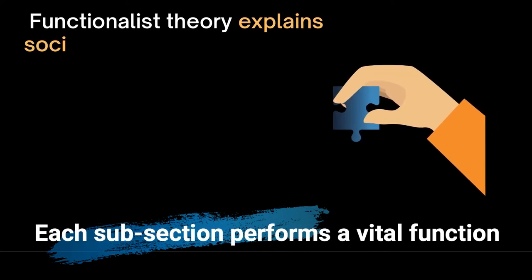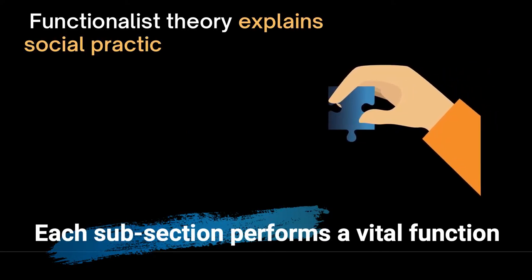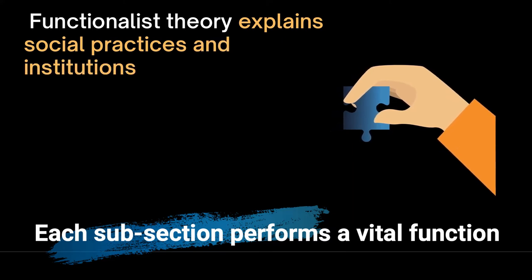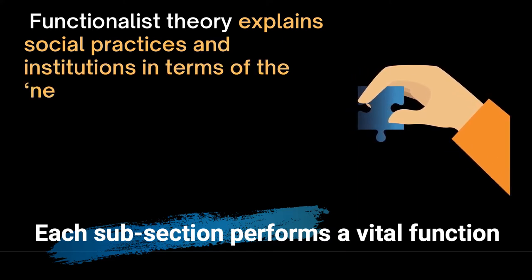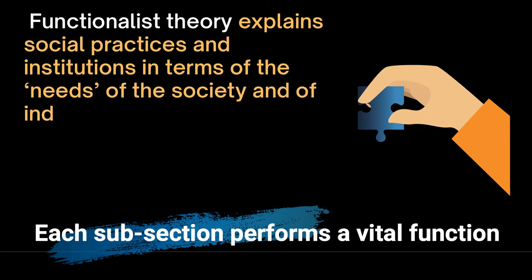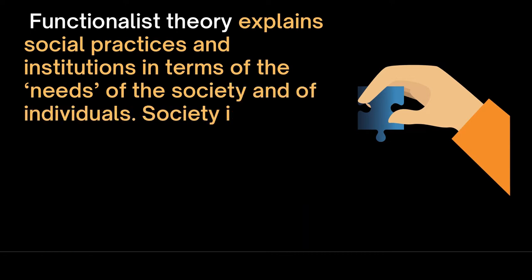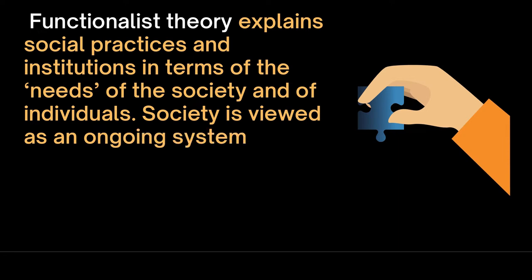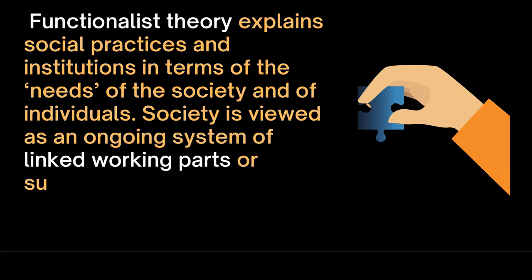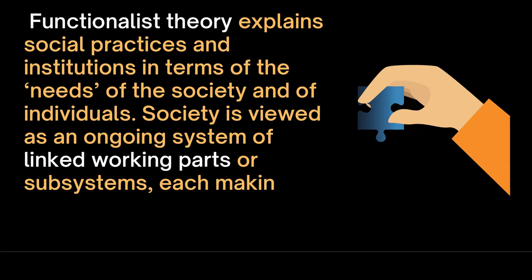Functionalist theory explains social practices and institutions in terms of the needs of society and of individuals. Society is viewed as an ongoing system of linked working parts or subsystems, each making an essential contribution to continuity and order.